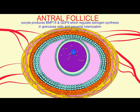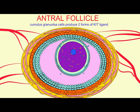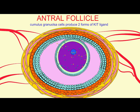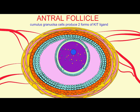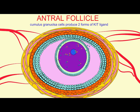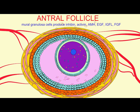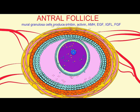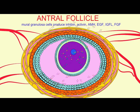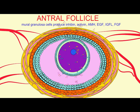These cells are interdependent upon one another and the signals that they produce. The oocyte is affecting the maturation and the estrogen production of the granulosa cells, while the granulosa cells are helping to keep the oocyte in meiotic arrest.